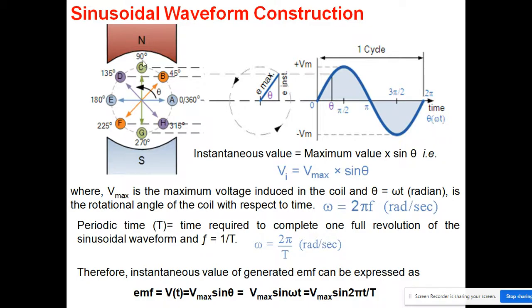So you can see the generated EMF: when a conductor moves in a stationary magnetic field, an EMF is induced. The value of this EMF is continuously changing — goes to maximum, comes down, then goes to maximum again in the reverse direction, and comes back to zero. This completes one full cycle.